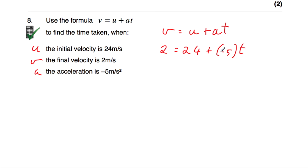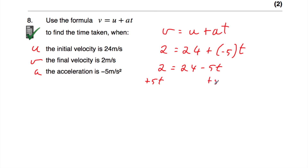Let's simplify — negative 5 times t is minus 5t, so we have 2 equals 24 minus 5t. Now we want to get t on its own. I'm going to add 5t to both sides to make it positive. The left-hand side becomes 2 plus 5t, and on the right-hand side we add 5t to get rid of the minus 5t, leaving just 24.